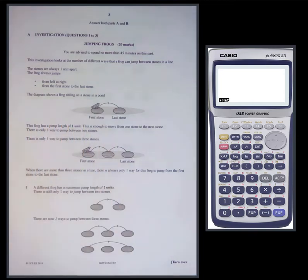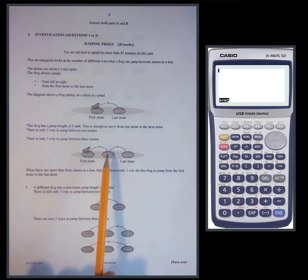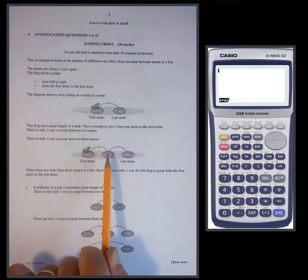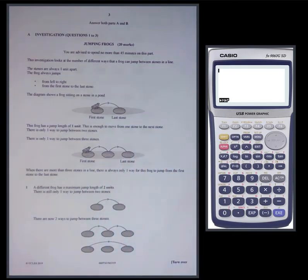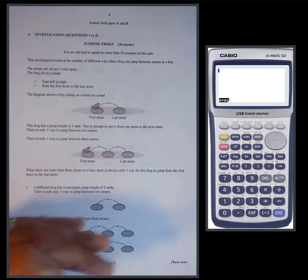The diagram shows a frog sitting on a stone in a pond. This frog has a jump length of one unit — enough to move from one stone to the next. There is only one way to jump between the stones. When you have a jump length of one unit, your only option is to go to the next stone, then the next, and so on. There's only one way, regardless of how many stones are in the line.